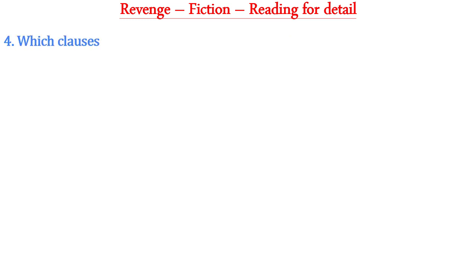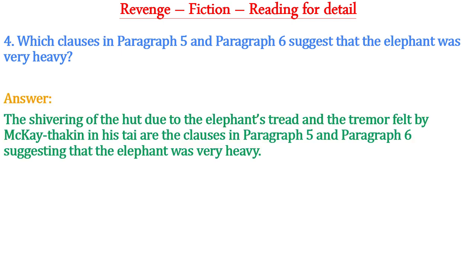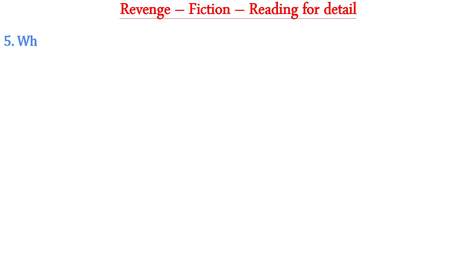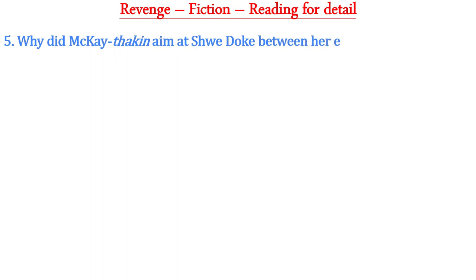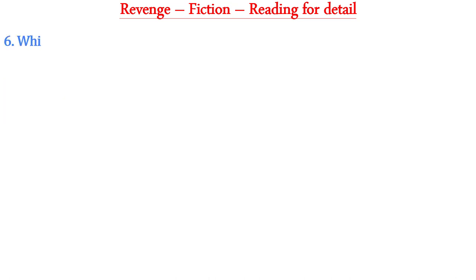Question four: Which clauses in paragraph five and paragraph six suggest that the elephant was very heavy? The answer is: the shivering of the hut due to the elephant's tread and the tremor felt by Mackay Thakin in his tie are the clauses suggesting the elephant was very heavy. Question five: Why did Mackay Thakin aim at Shuidok between her ear and eye? Because it is the most vulnerable spot of the elephant.